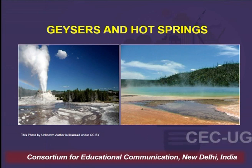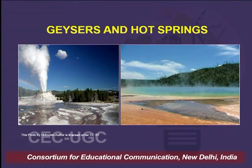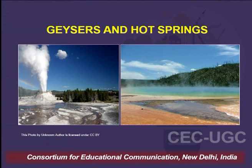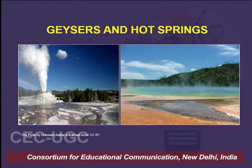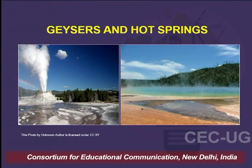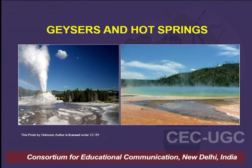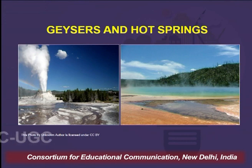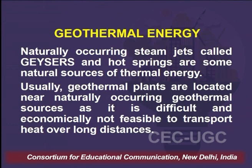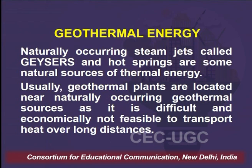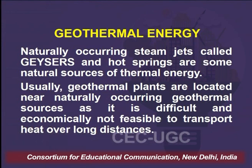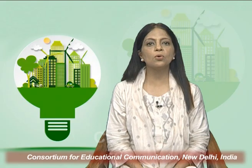This heat is shown in the form of geysers and hot springs in certain areas. The picture on the left side shows geysers and the picture on the right side shows hot springs. Naturally occurring steam jets are called geysers — it is a kind of a steam jet where hot water along with steam is pushing out through the earth's crust upwards, carrying a lot of energy. Hot springs are natural sources of thermal energy. Geothermal plants are usually located near naturally occurring geothermal sources, as it is difficult and economically not feasible to transport heat over long distances. Geysers contribute to only a small amount of geothermal energy.